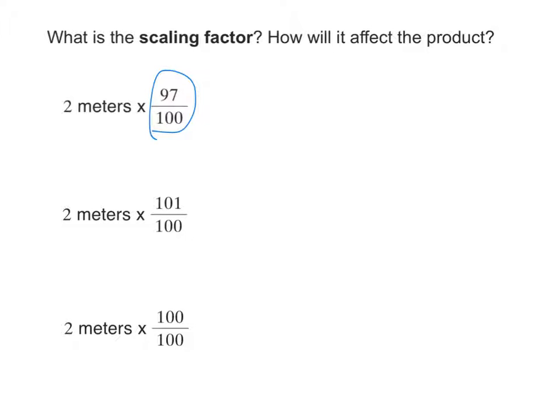In the second example, 2 meters times 101 over 100, what is the scaling factor? 101 hundredths. 101 hundredths, you got it. And in the last example, 100 over 100 times 2 meters, what's the scaling factor? Very good. Remember that the scaling factor is the one that's changing the size of the meters, or whatever the other factor is.